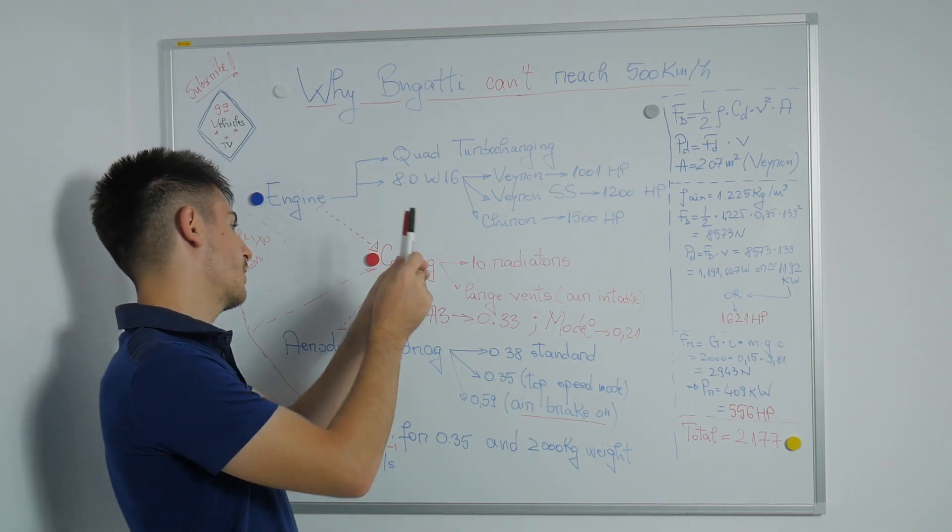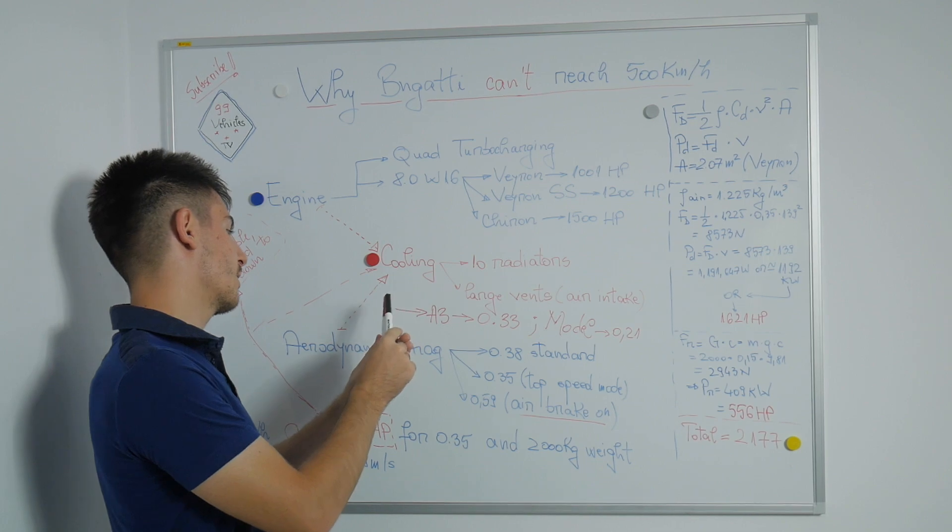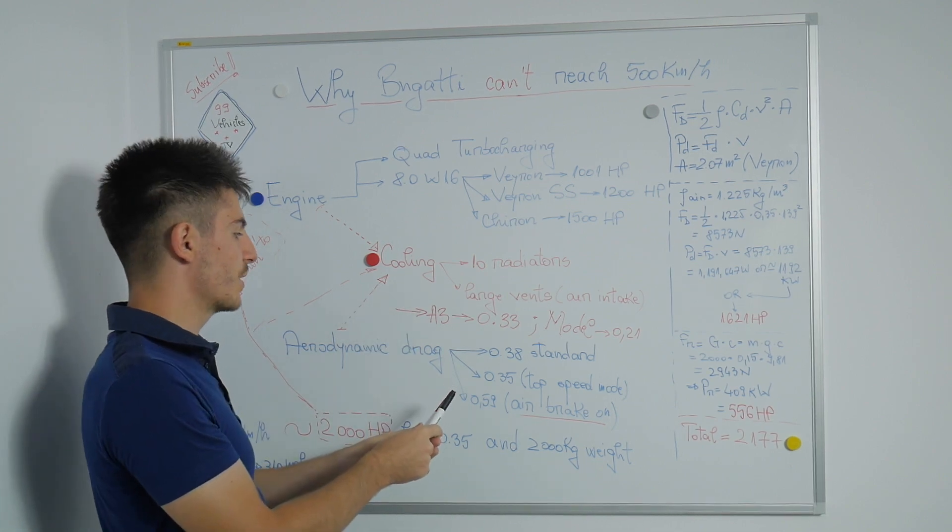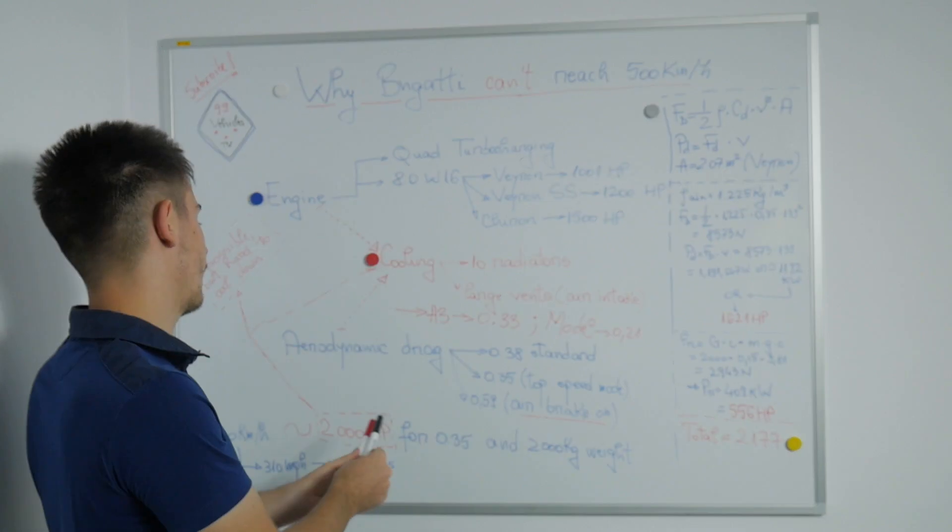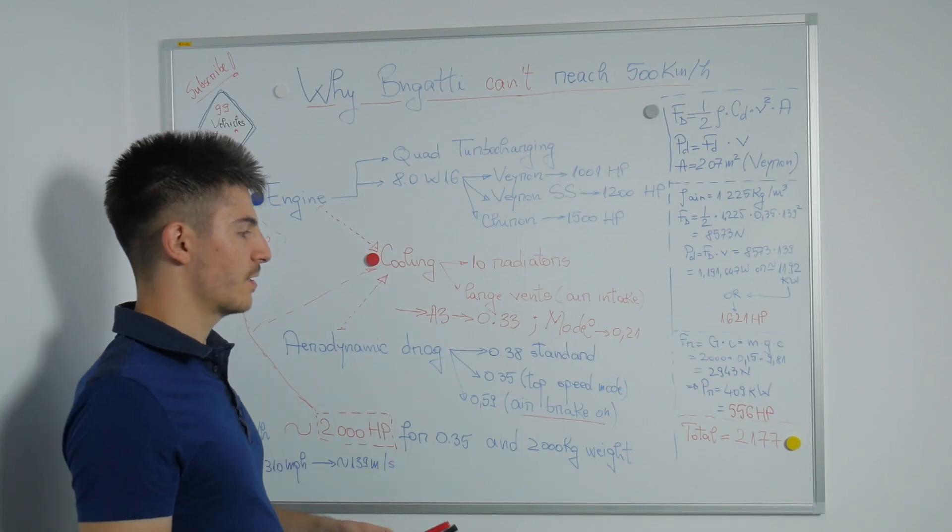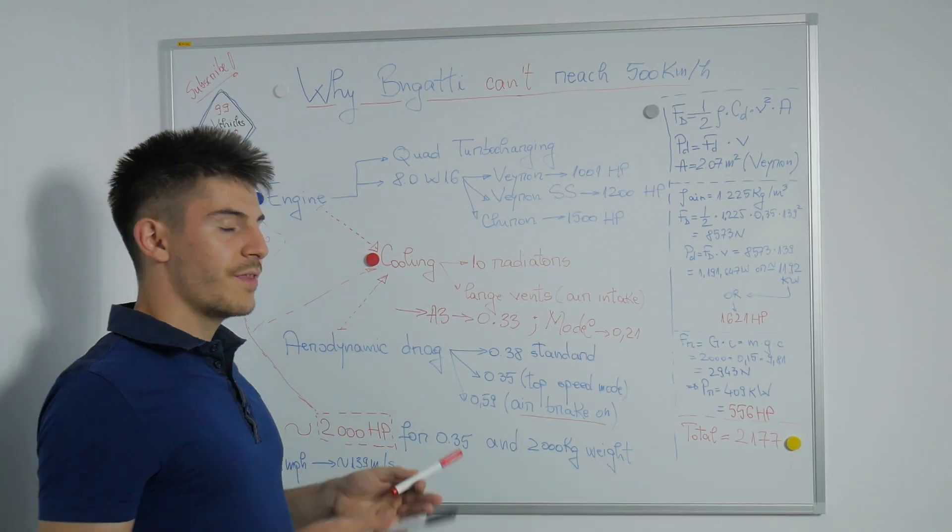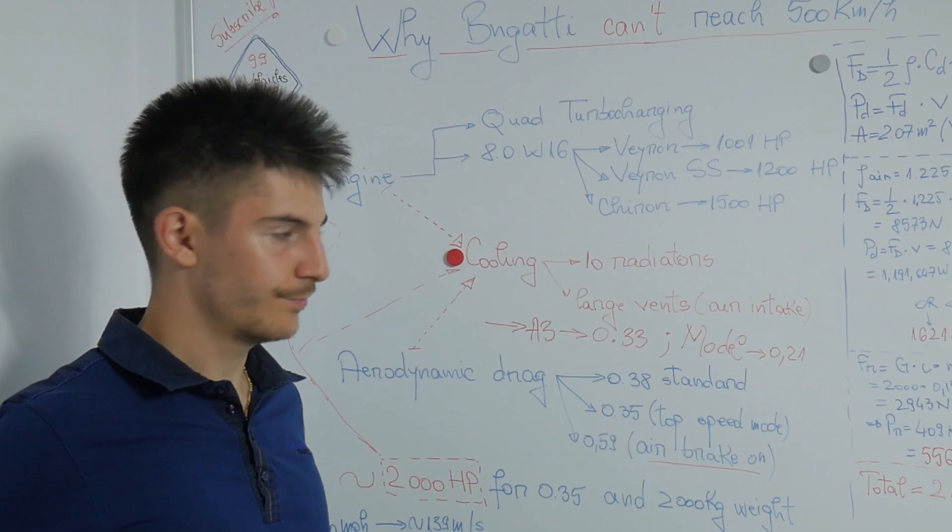To have more power you need more cooling. More cooling will result in having a worse aerodynamic drag coefficient, which will require a lot more power to surpass higher speeds. So everything needs to be perfectly balanced.